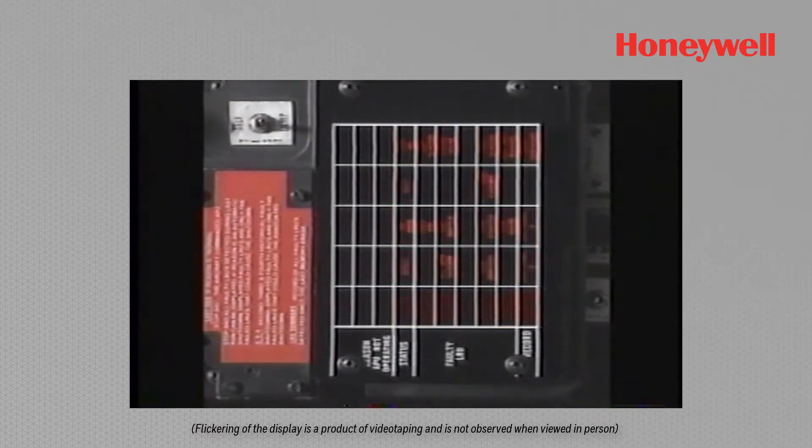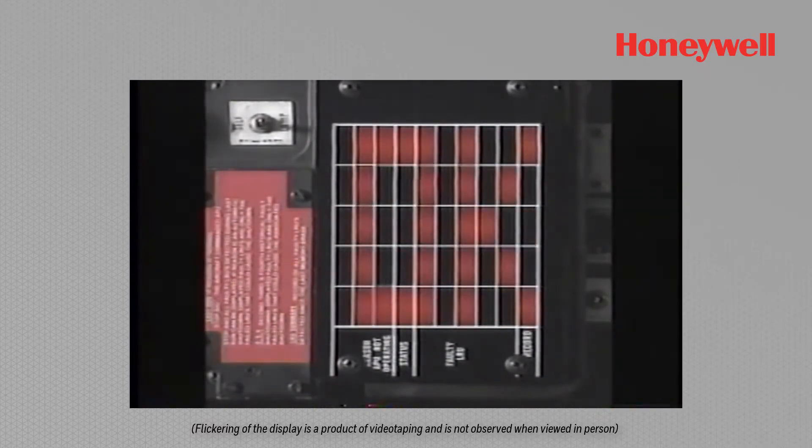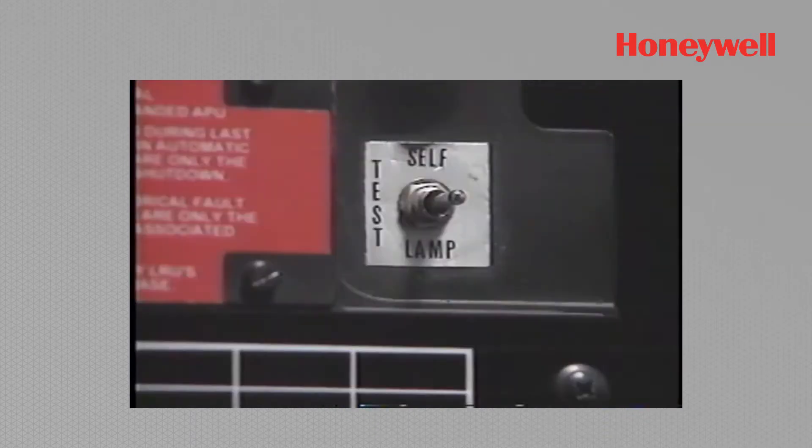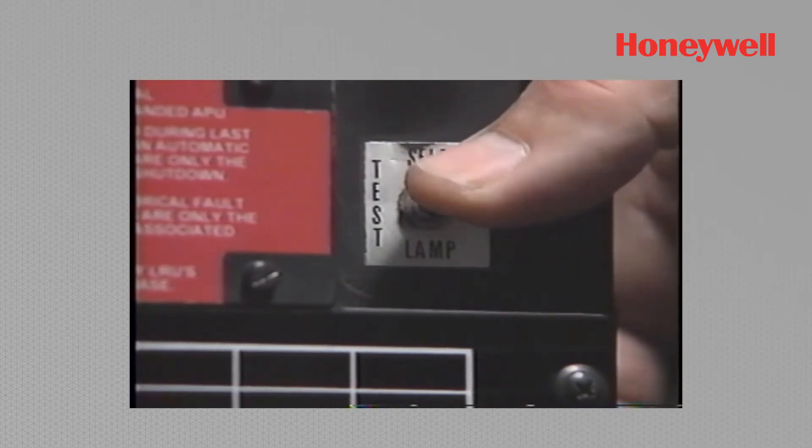The mini-flag display is a detailed summary of failed components or failure conditions. If no mini-flag information exists, OK will be displayed. This sequential display will repeat each time the lamp test button is momentarily pressed.